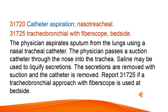Catheter Aspiration, Nasotracheal. Tracheobronchial with Fibroscope, Bedside. The physician aspirates sputum from the lungs using a nasotracheal catheter. The physician passes a suction catheter through the nose into the trachea. Saline may be used to liquefy secretions. The secretions are removed with suction and the catheter is removed. Report 31,725 if a tracheobronchial approach with Fibroscope is used at bedside.